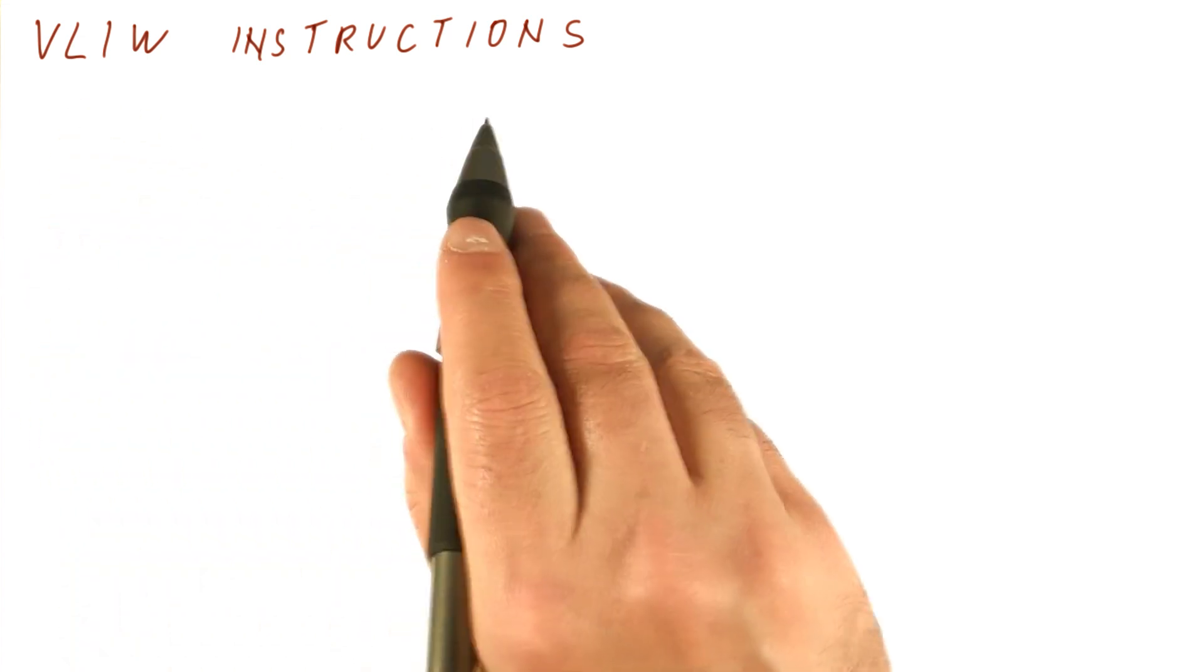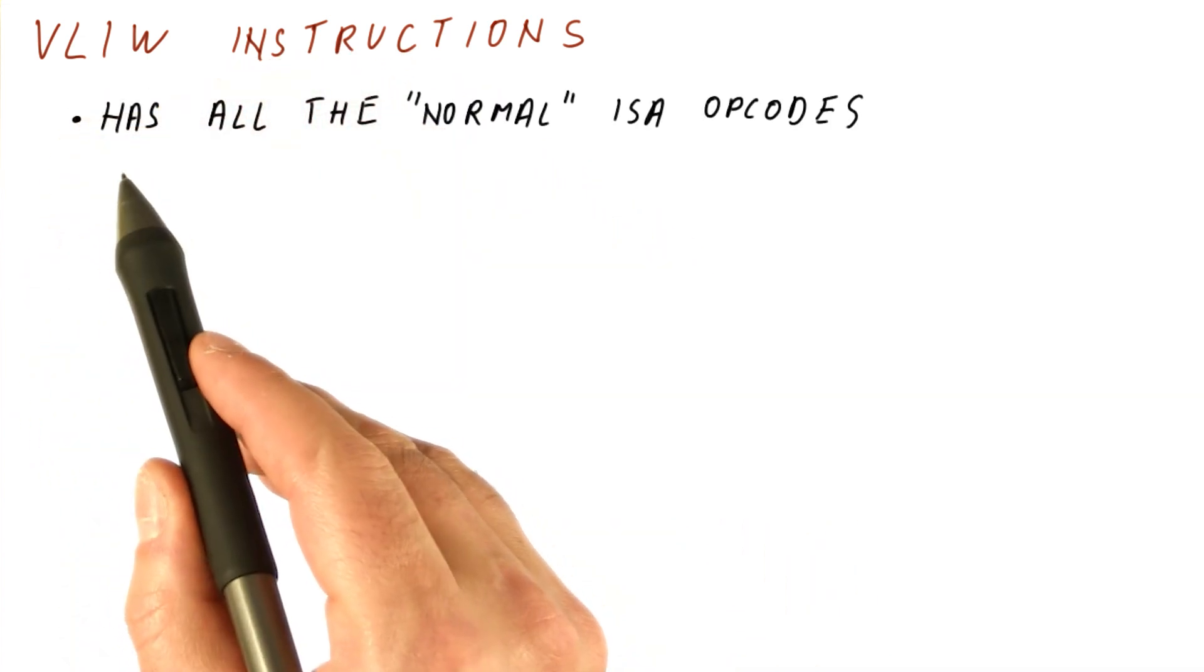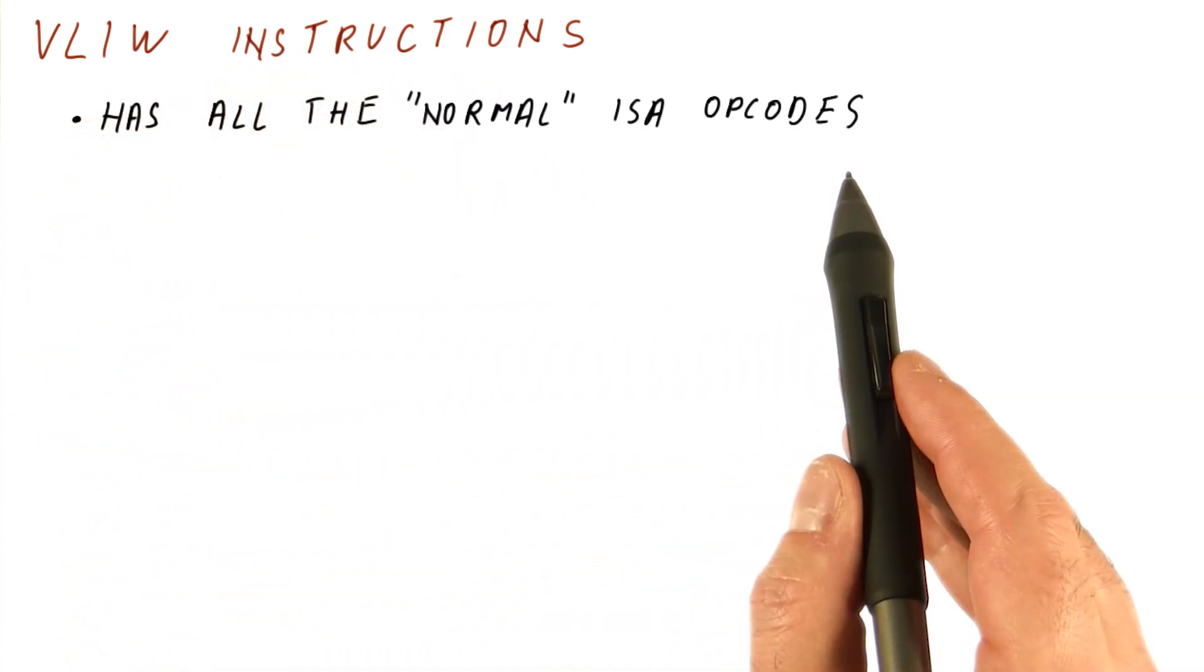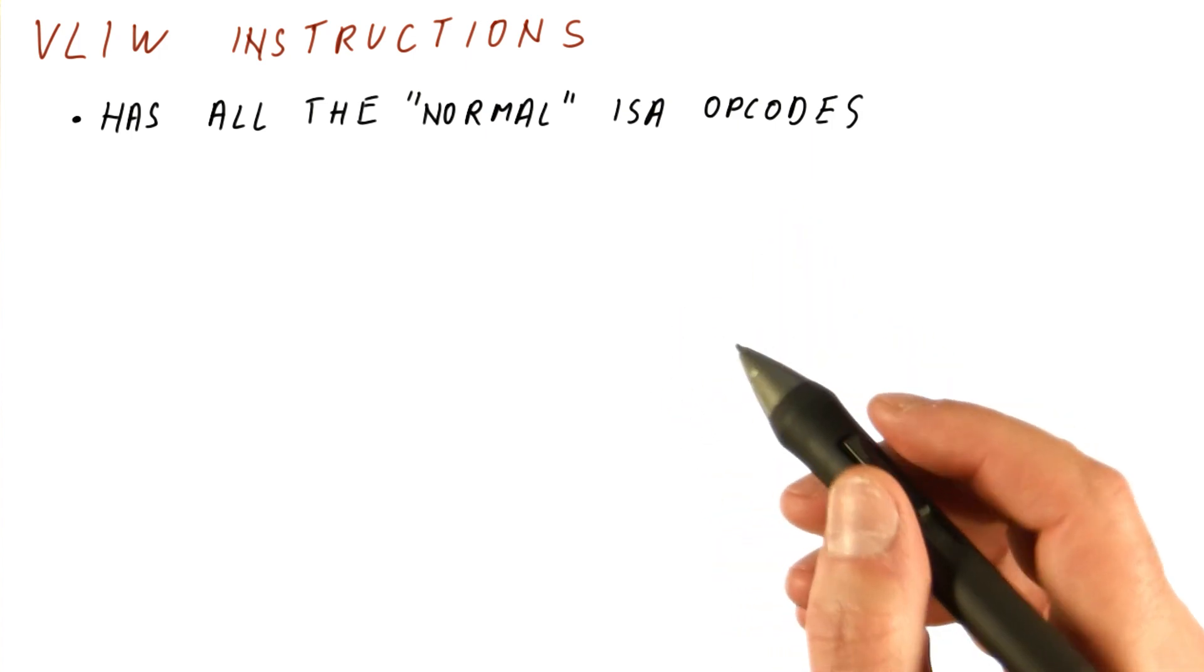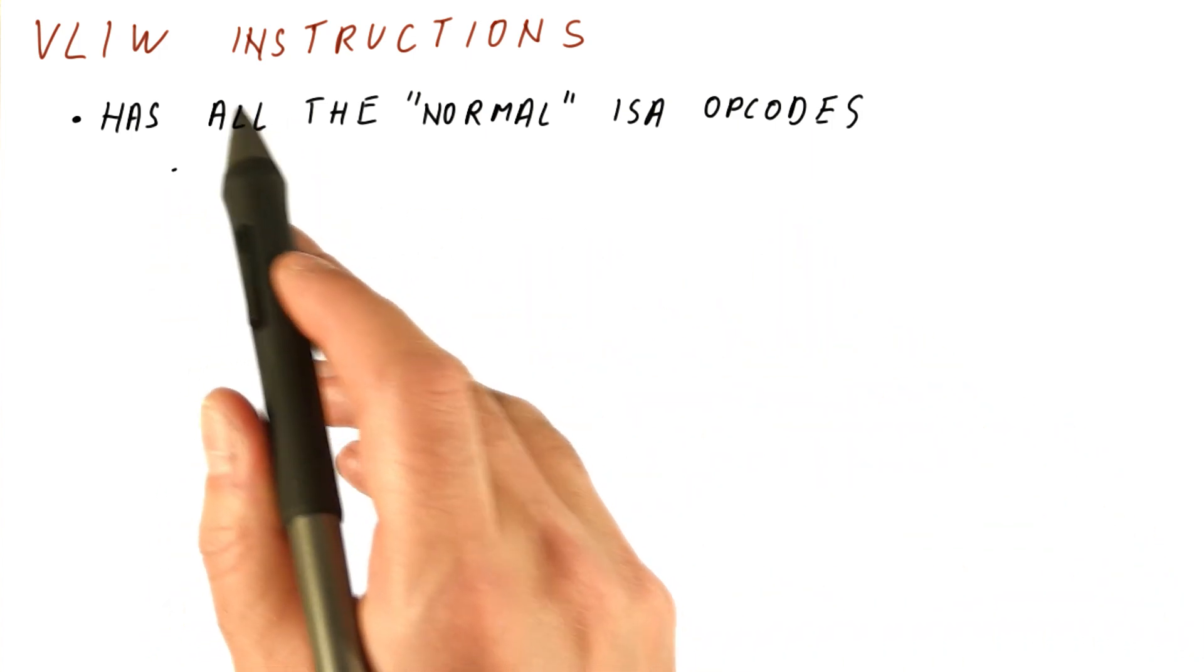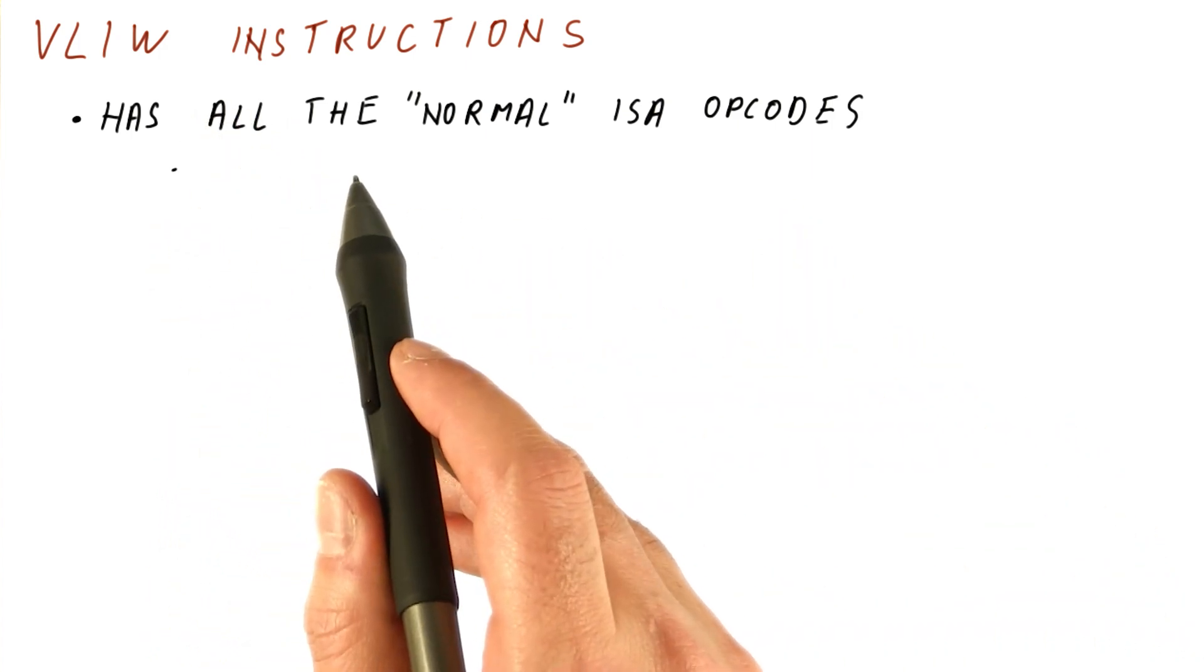The instruction set for a VLIW processor typically has all the normal ISA opcodes. So each of the VLIW instructions can typically do whatever normal instructions would have been able to do in an out-of-order processor.